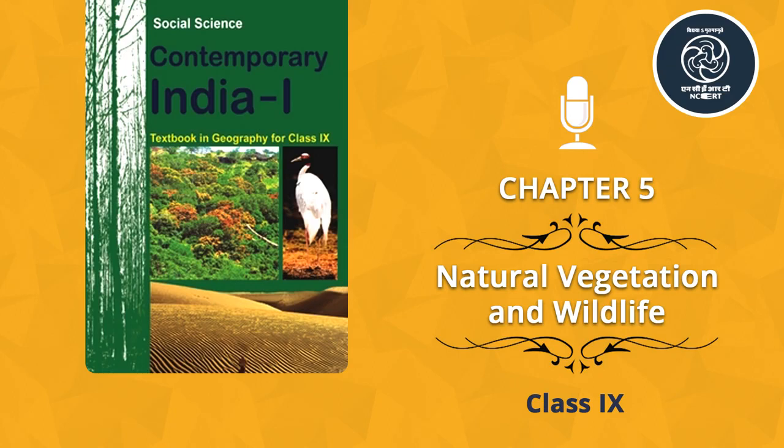Page 42. Chapter 5: Natural Vegetation and Wildlife. Friends, have you observed the types of trees, bushes, grasses and birds in the fields and parks in and around your school? Are they similar or are there variations? India, being a vast country, you can imagine the types of bioforms available throughout the country.